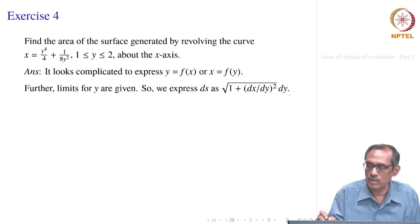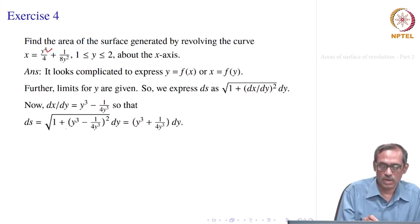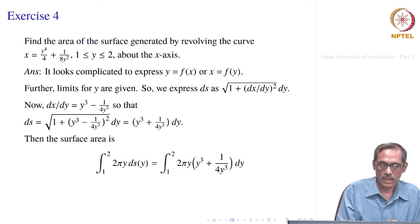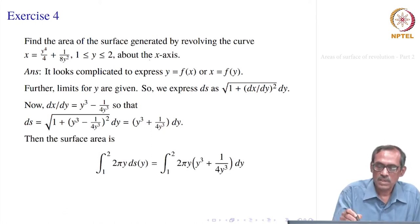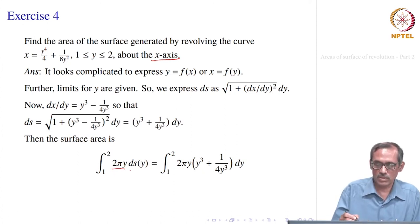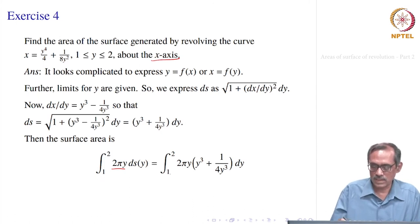We compute ds = √(1 + (dx/dy)²) dy. Differentiating: dx/dy = y³ - 1/(4y³). Then ds = √(1 + (y³ - 1/(4y³))²) dy = (y³ + 1/(4y³)) dy. Since it is about the x-axis, we use 2π·y·ds as a function of y, with limits from 1 to 2.